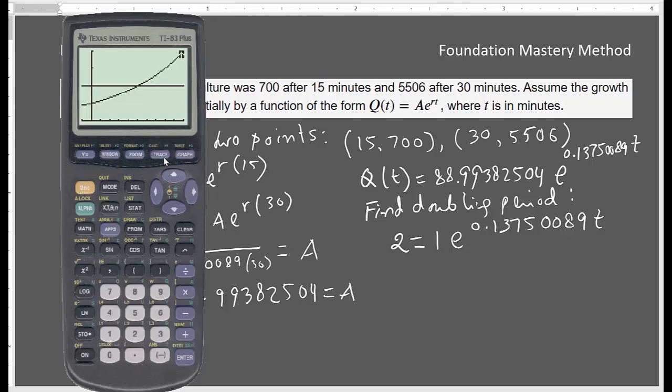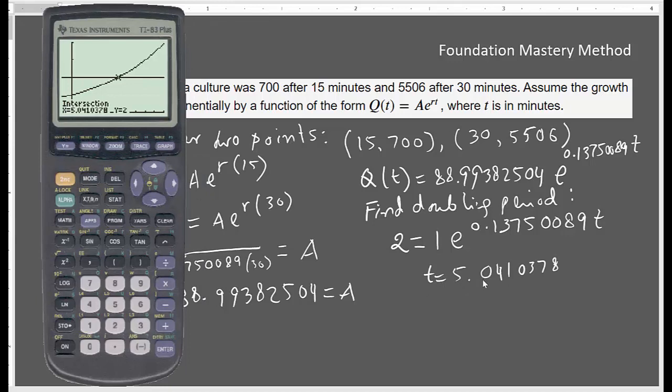So this is the graph. Now we need to find the point. So go to second, Trace for the intersection. Hit 5. So you are very close to the point. Just enter, enter, enter. So it is giving you your time is 5.0410378. So you got that's your t. So we are done for this one.